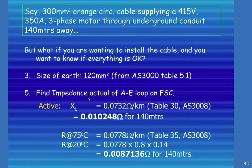Find the impedance of the actual earth loop on FSC. The active XL is 0.0723Ω/km from table 30, AS3008, which is 0.010248Ω for 140 meters. Assuming 75°C worst case, from AS3008 table 35, the resistance R is 0.0778Ω/km or 0.0778 × 0.8 × 0.14 = 0.0087136Ω for 140 meters. So we now have XL and R.